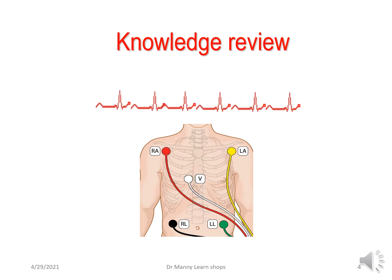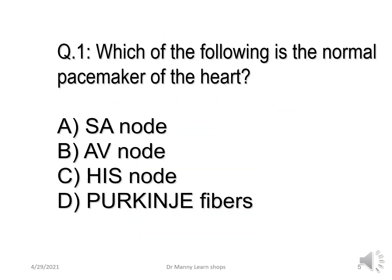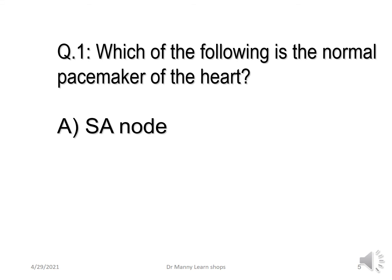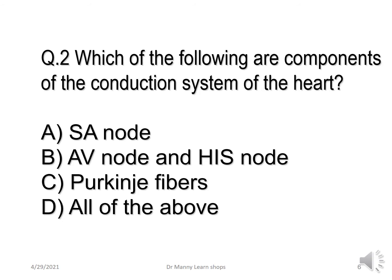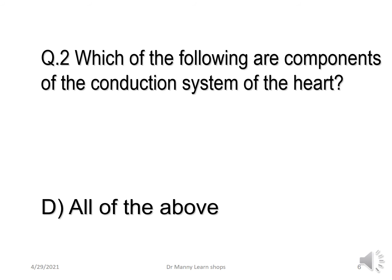Let's review your knowledge again. Which of the following is the normal pacemaker of the heart? The correct answer is A, the SA node. Which of the following are components of the conduction system of the heart? The correct answer is all of them are.